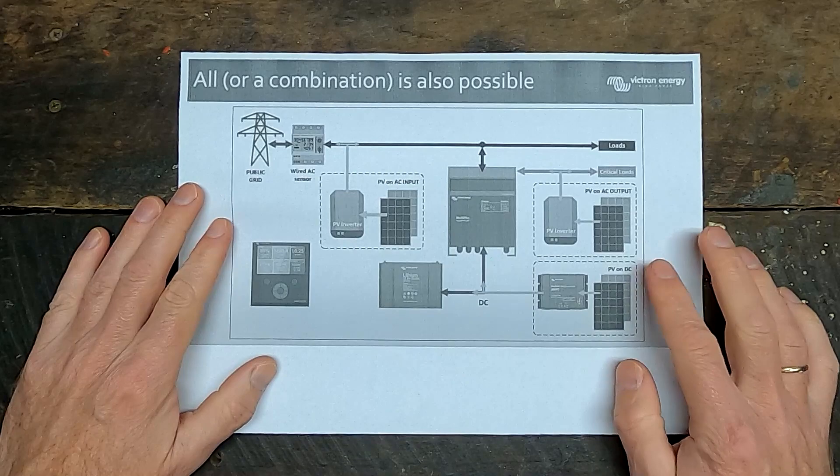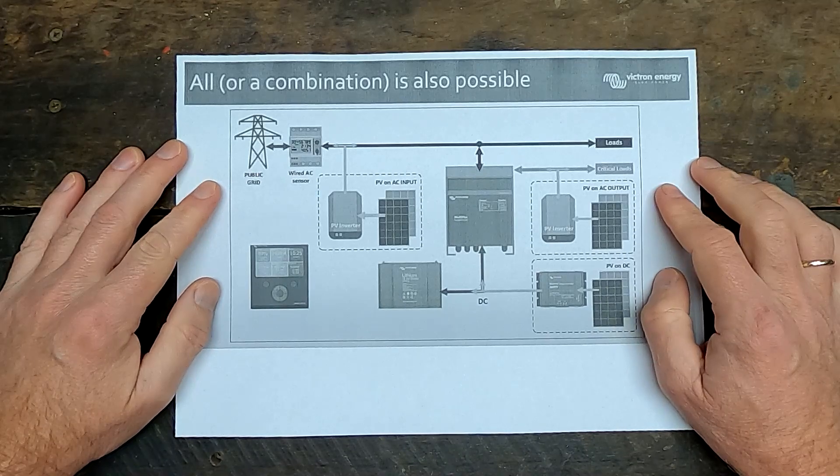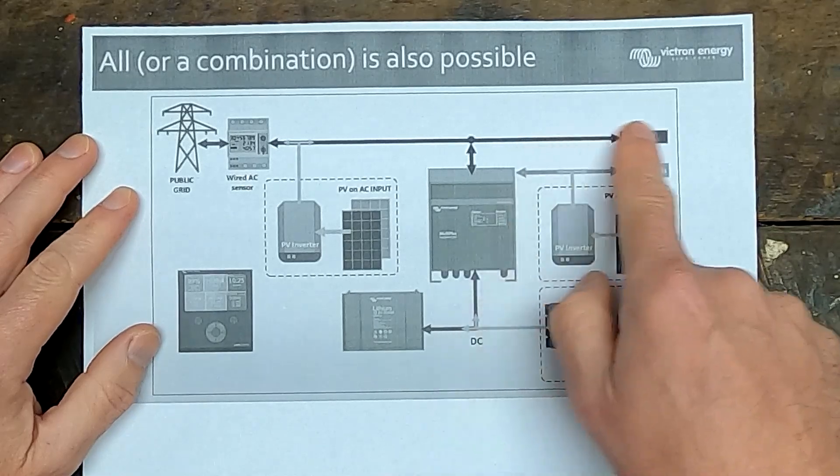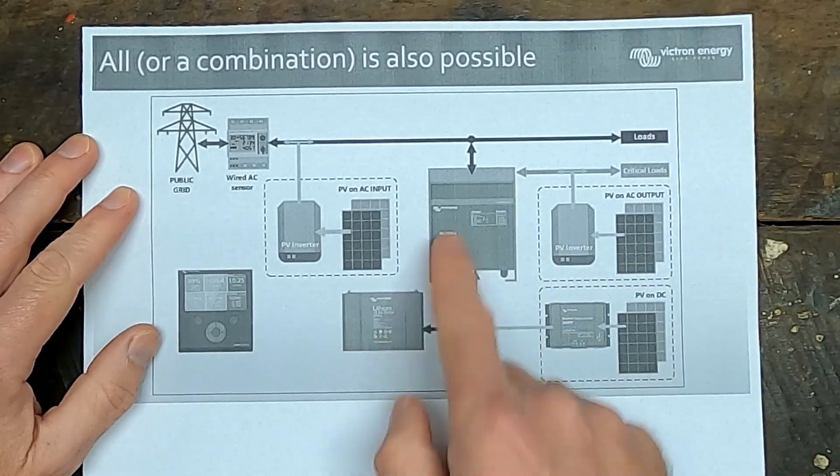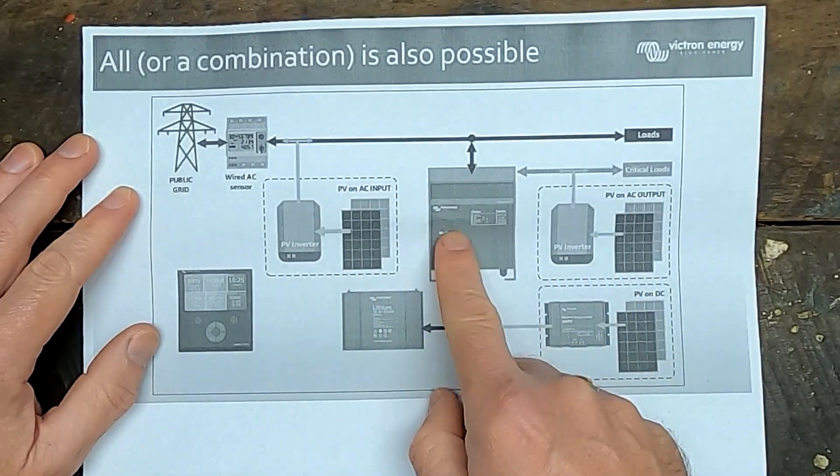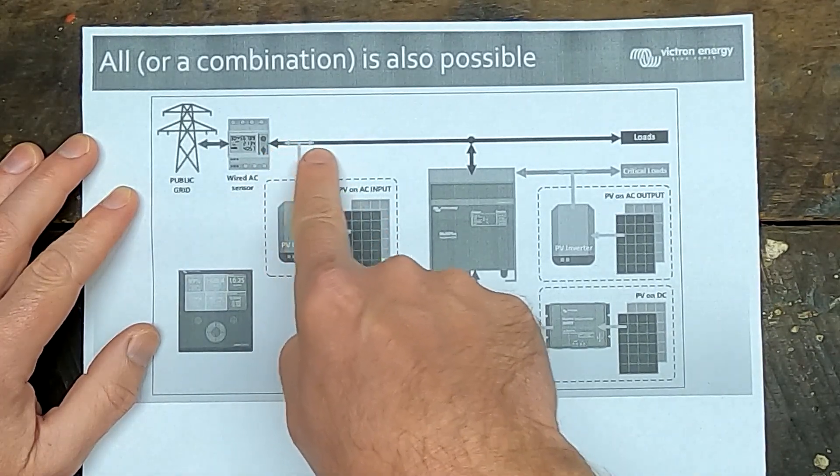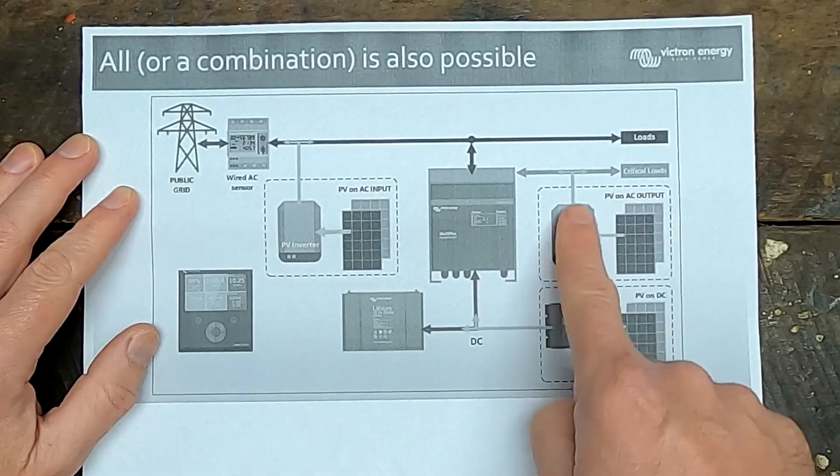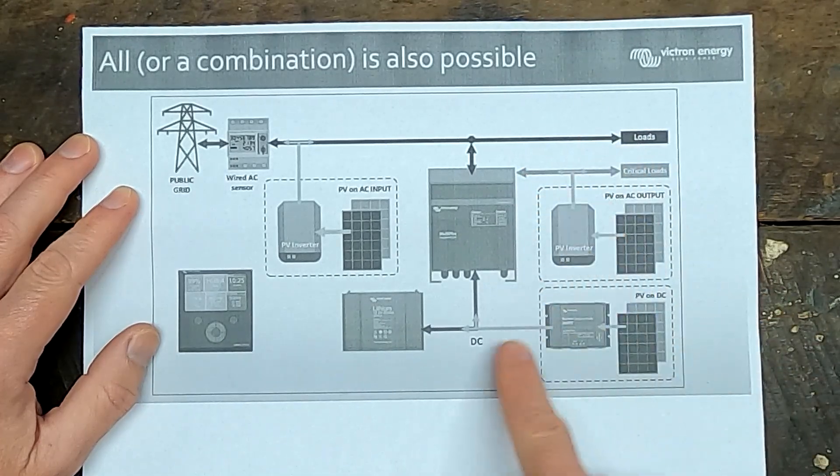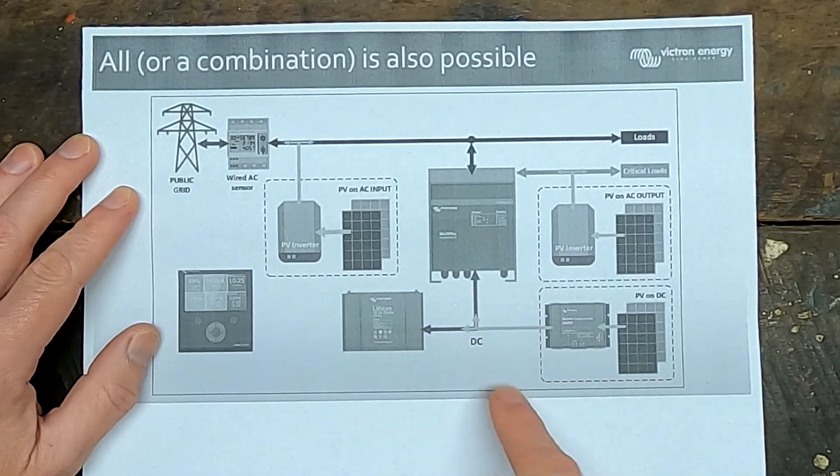Well, I did some more research and found the Victron Energy ESS, the energy storage system. And here as well, we've got a hybrid inverter connected to our loads, connected to a battery, and connected to the grid, and connected to solar. What this device can do, though, is it can deal with solar and PV here at this point. It can deal with solar and PV here at this point. And this is exactly my situation. And it also can deal with solar and PV here on the DC side, which is my situation as well.